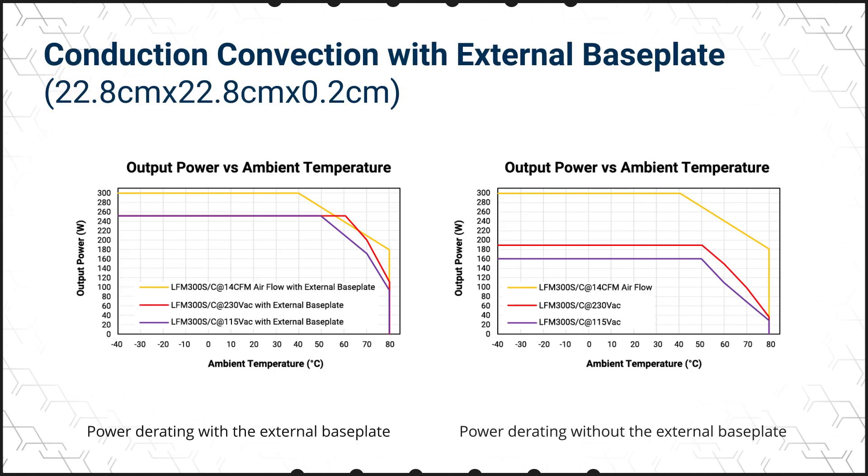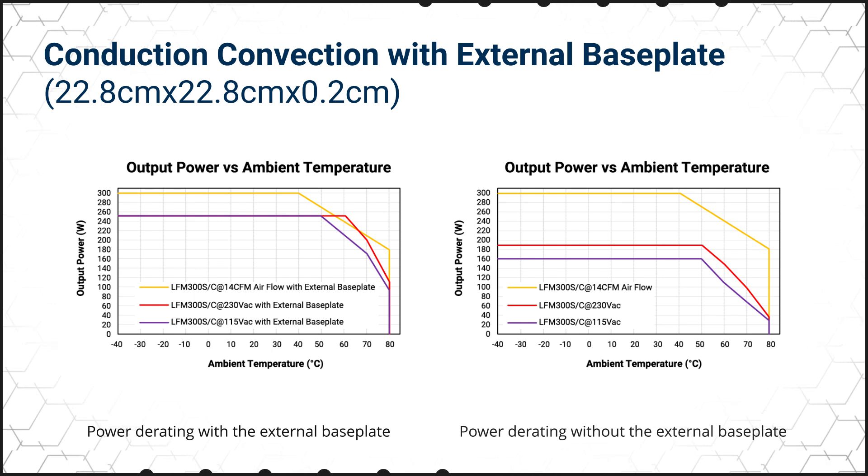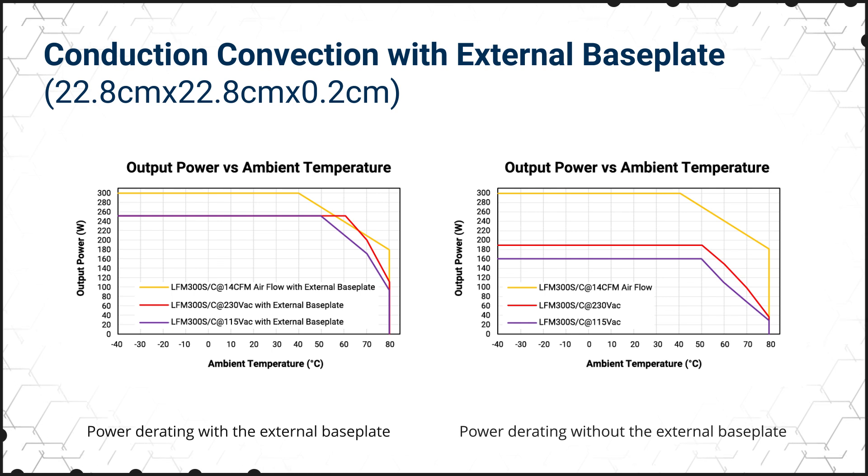Using an external base plate without a fan allows for a 250 watt output. With just natural convection cooling, the power output is limited to 160 or 190 watts depending on the input voltage.